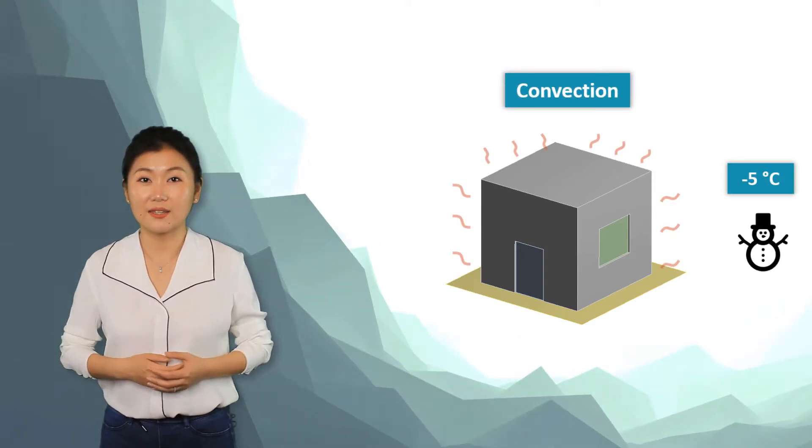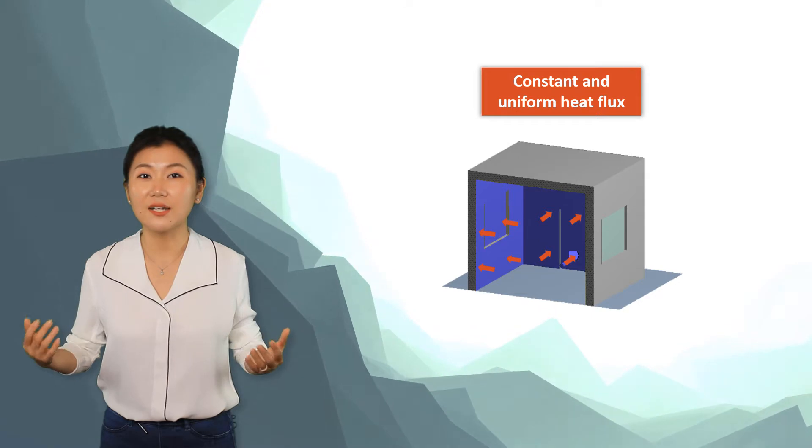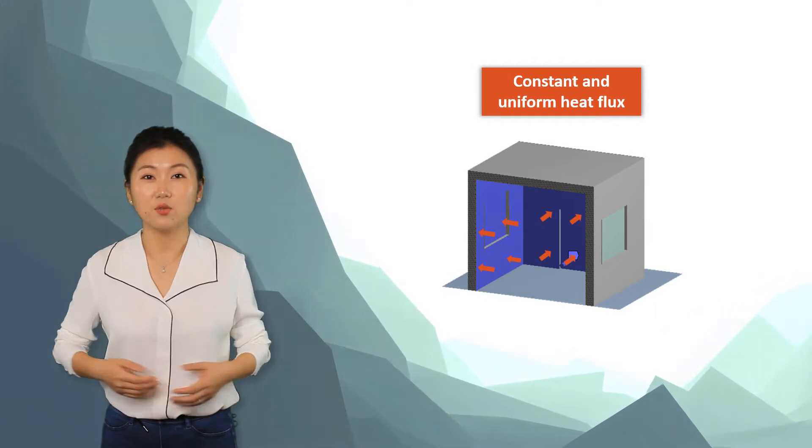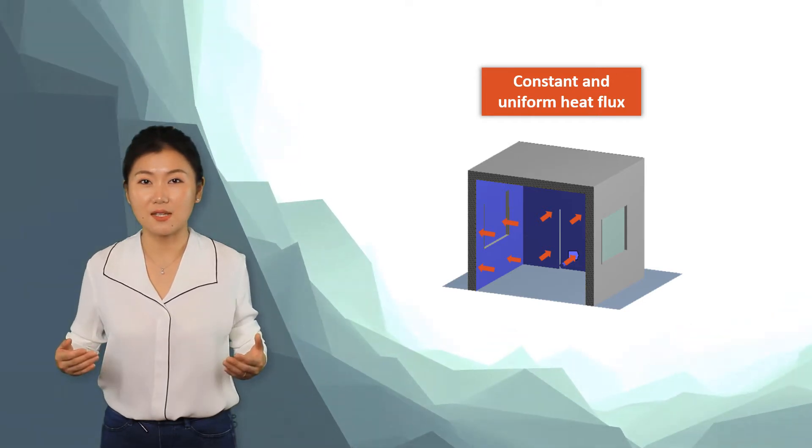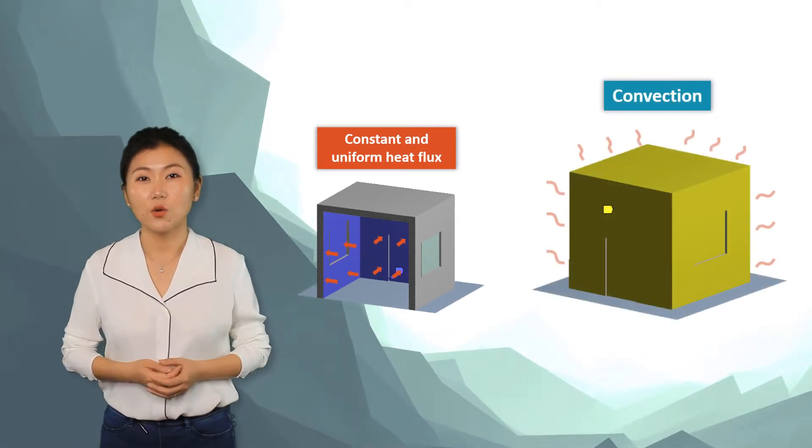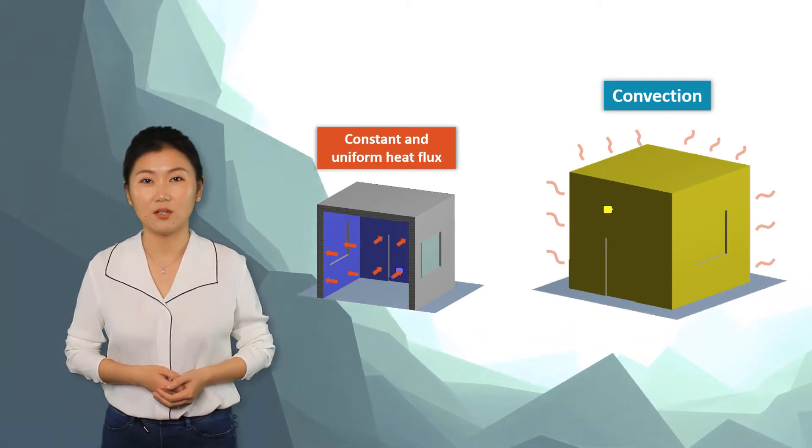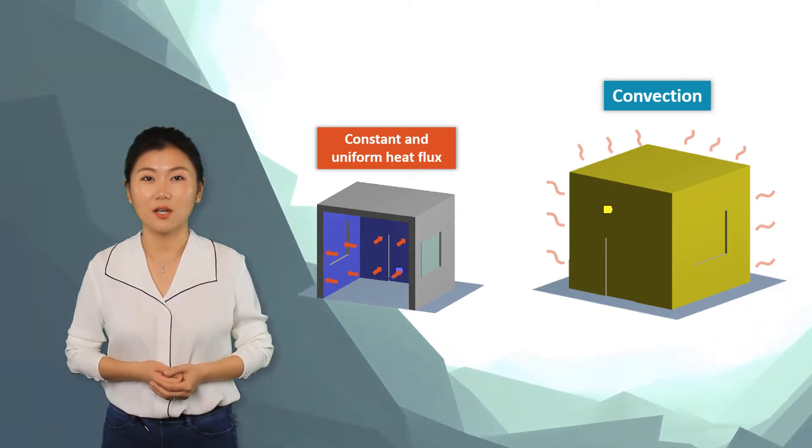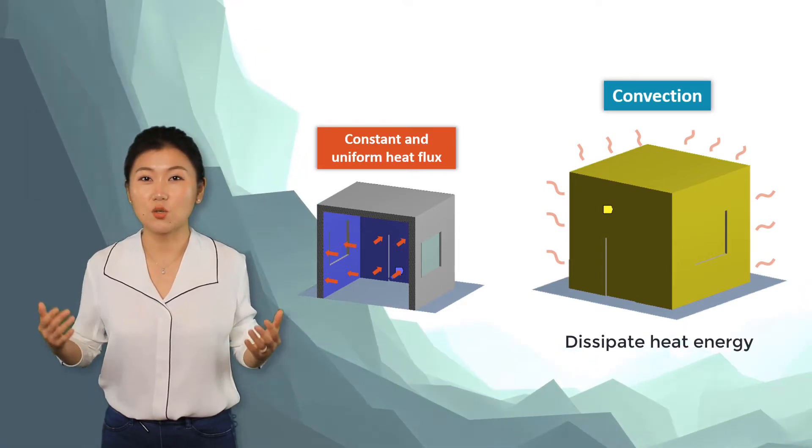For the boundary conditions in the steady-state thermal simulation, we applied a constant and uniform heat flux for the entire interior surface. Of course, it's a simplification we made for the simulation. In real life, the heat flux might not be perfectly uniform due to complex geometry and varying distances between the surfaces and the heat source. For the exterior surface of the house, we added a convection boundary condition. Convection is one of the three modes of heat transfer. The physics of convection will be discussed in later sections in this course. Here, we can view convection as a boundary condition that removes heat energy from a hot surface to the cold ambient environment.